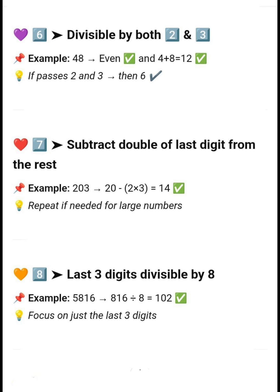Next, divisible by 6 — if a number is divisible by both 2 and 3, for example 48. Next, divisible by 7 — subtract double the last digit from the rest. For example, 203: 20 minus 2×3 equals 14, and 14 is divisible by 7, so 203 is also divisible by 7.